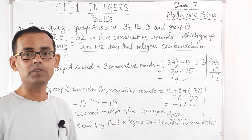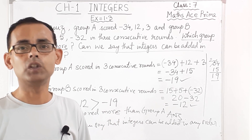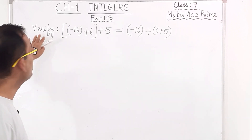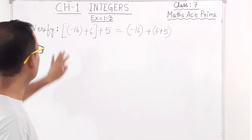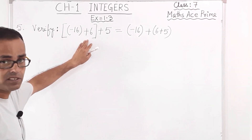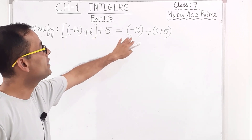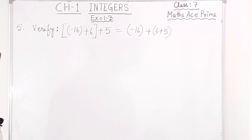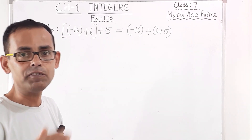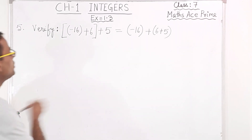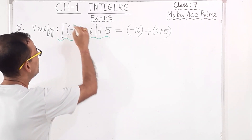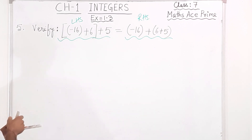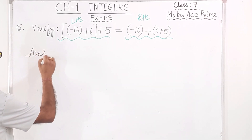Now we will move to the last sum, question number 5 of Exercise 1.3. They are asking us to verify: minus 16 plus open bracket 6 plus 5 close bracket equals minus 16 plus 6, close bracket, plus 5. We have to verify this. Verification means we do the left hand side and right hand side separately — this part is the left hand side and this part is the right hand side.